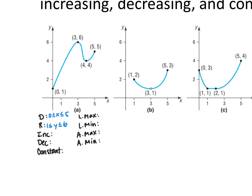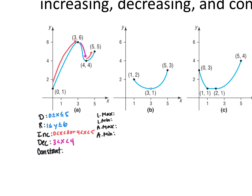For graph A, looking at domain and range: the smallest x is 0 and the biggest is 5, so 0 ≤ x ≤ 5. For range, the lowest y-value is 1 and the highest is 6, with everything continuous in between, so 1 ≤ y ≤ 6. For increasing, the graph goes up from x = 0 all the way to x = 3, so 0 < x < 3.